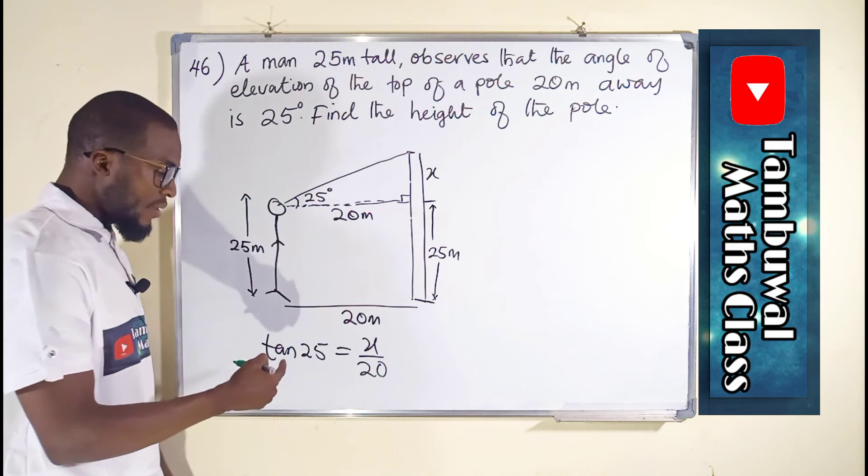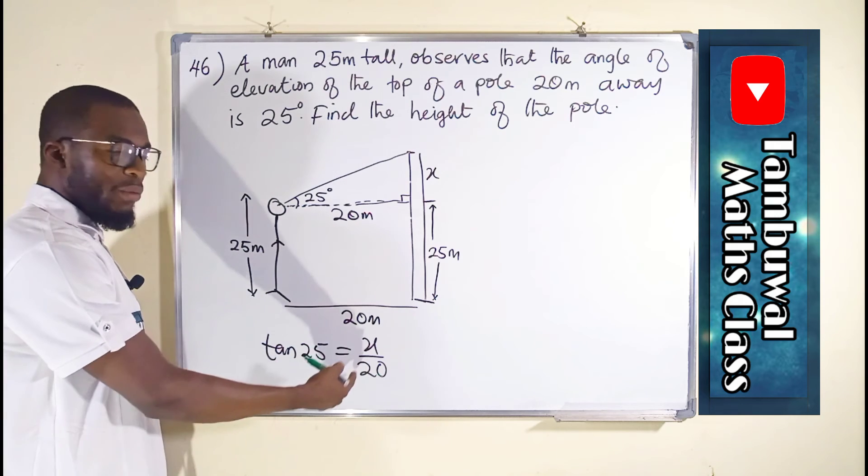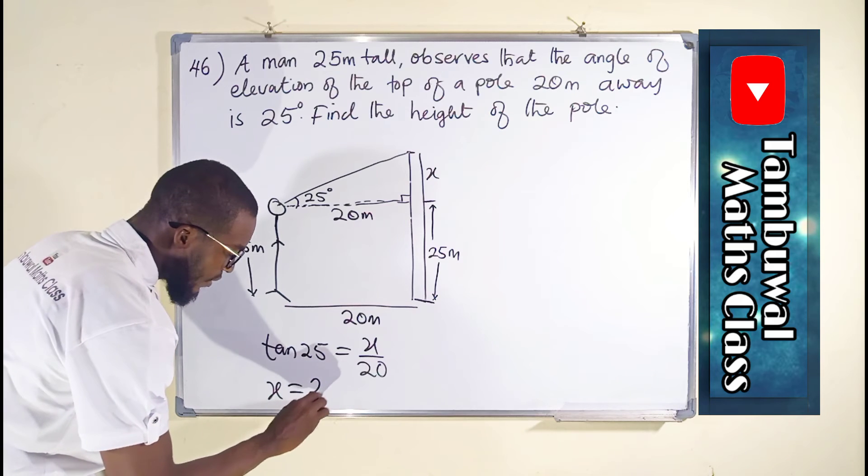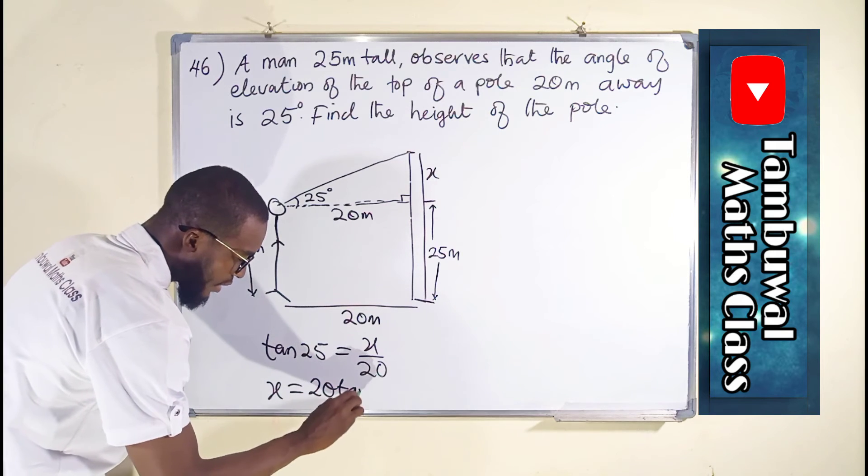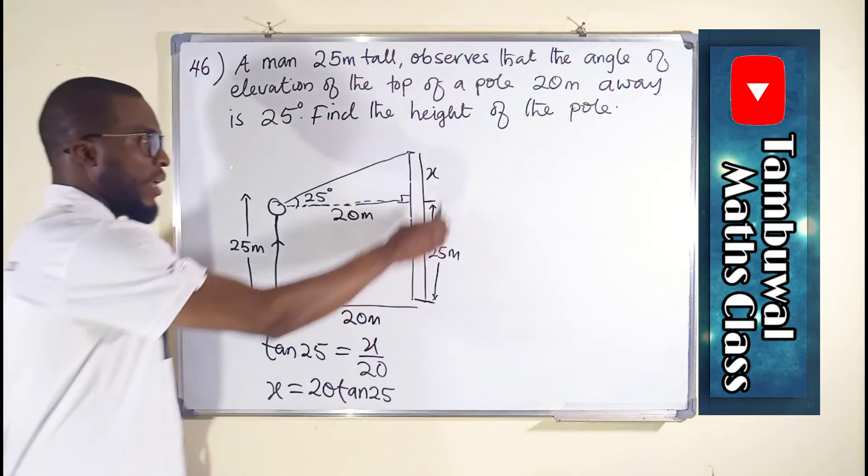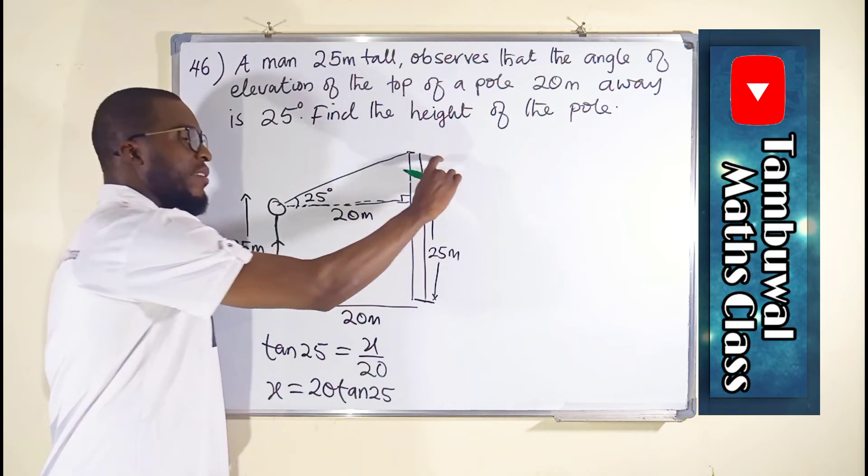To find the value of X, we can then multiply both sides by 20. And X will be equal to 20 tan of 25. And it is going to be the distance here.